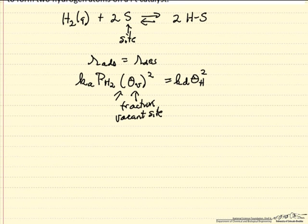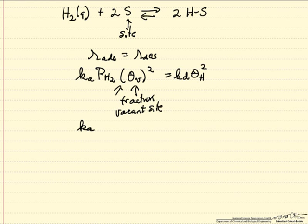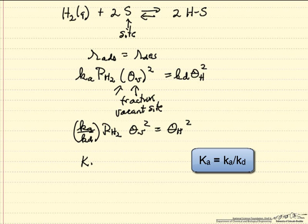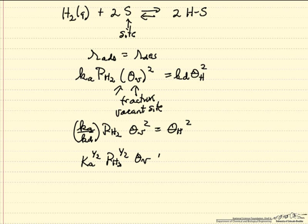We're just going to rearrange this equation and write the ratio of the rate constants. We're going to call this an adsorption equilibrium constant, and then we're going to take the square root of both sides, so this is an adsorption equilibrium constant, the pressure of hydrogen to the 1 half power, theta of vacant sites, this is equal to the theta of hydrogen.